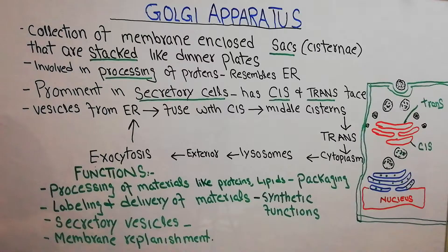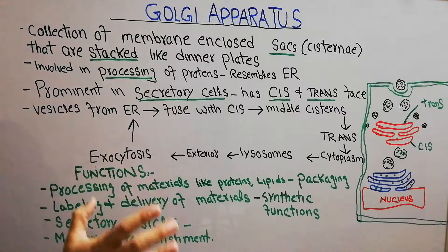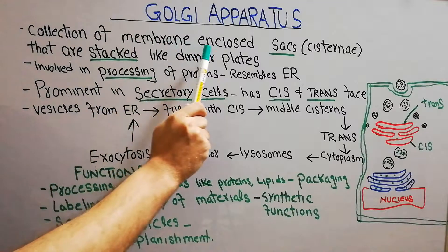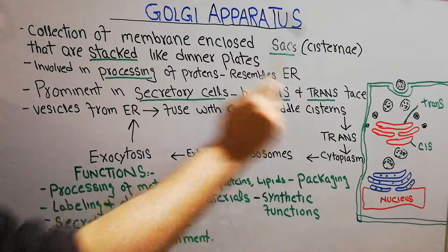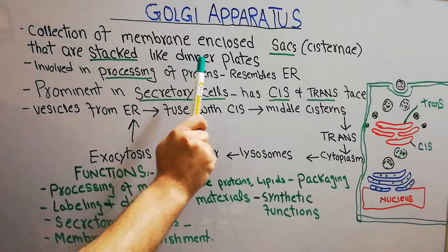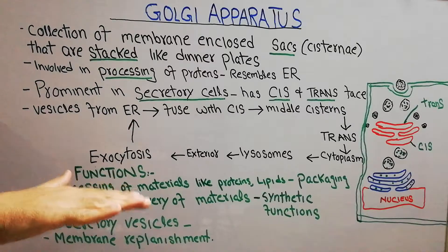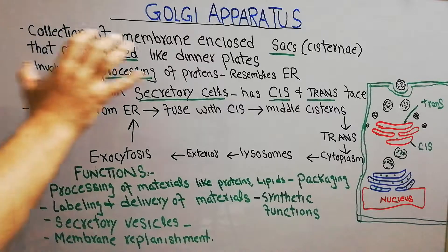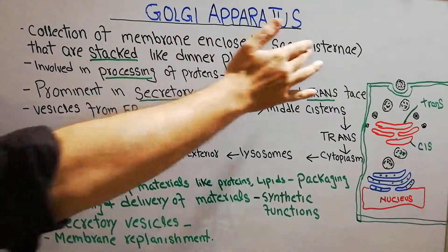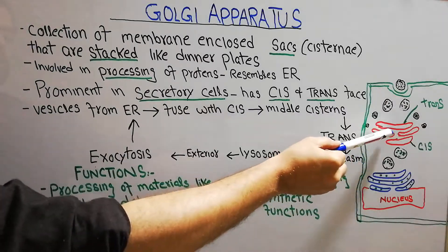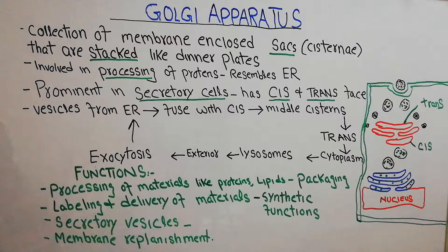So what basically is the Golgi apparatus and what are its functions? The Golgi apparatus is nothing but a collection of membrane-enclosed stacks or cisterns that are stacked like dinner plates. Just as dinner plates in a kitchen are kept on top of each other to form a stack or bundle, these are membrane-enclosed stacks also known as cisterns.